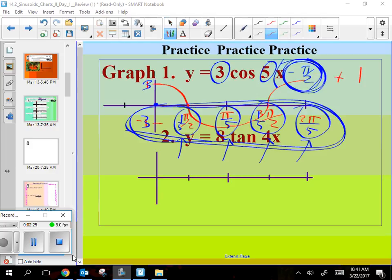Then, what if I did this? Plus 1. Where does that move the whole graph? Up 1. And then, how about a negative? What would that do? Make it flip.